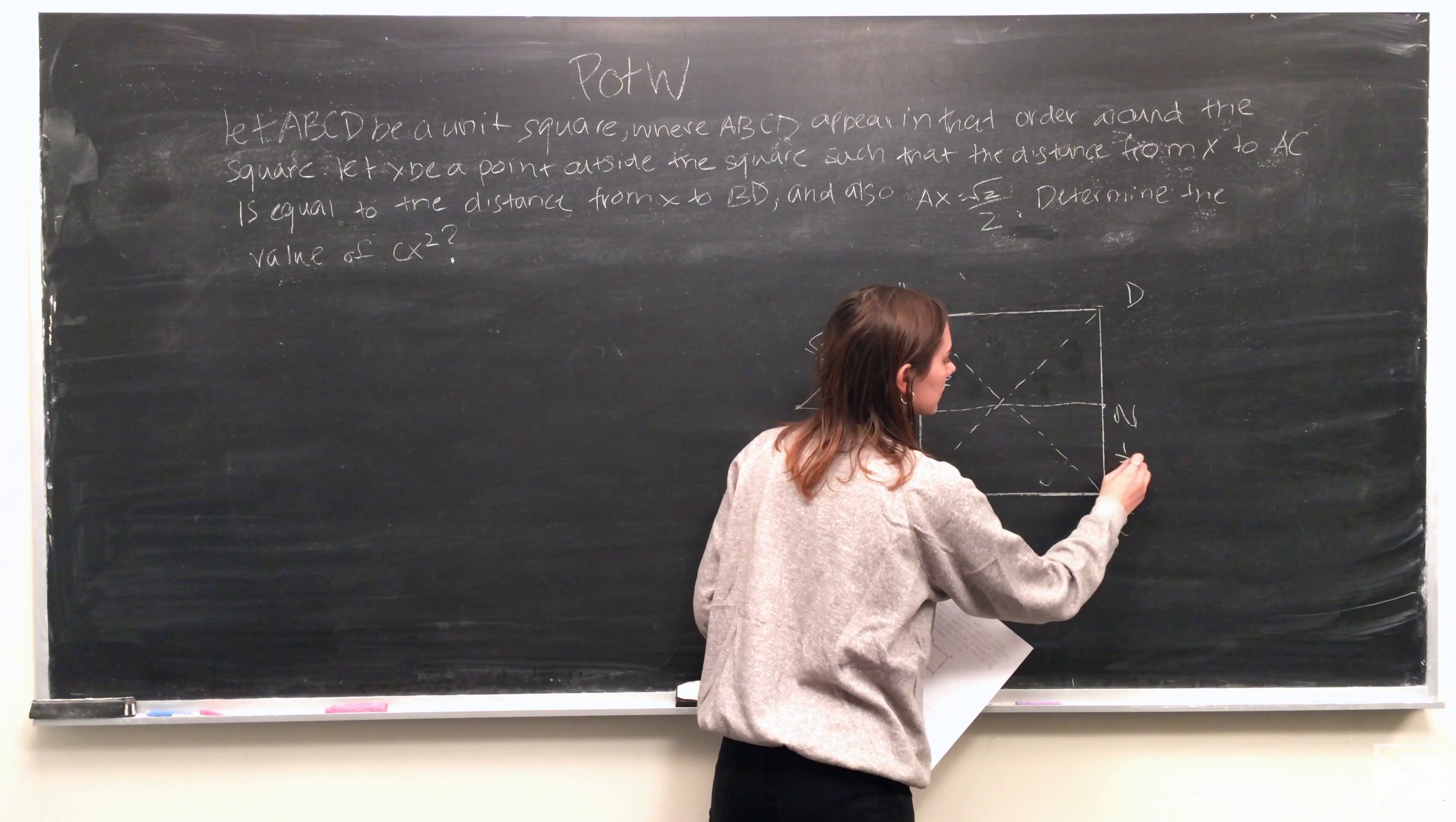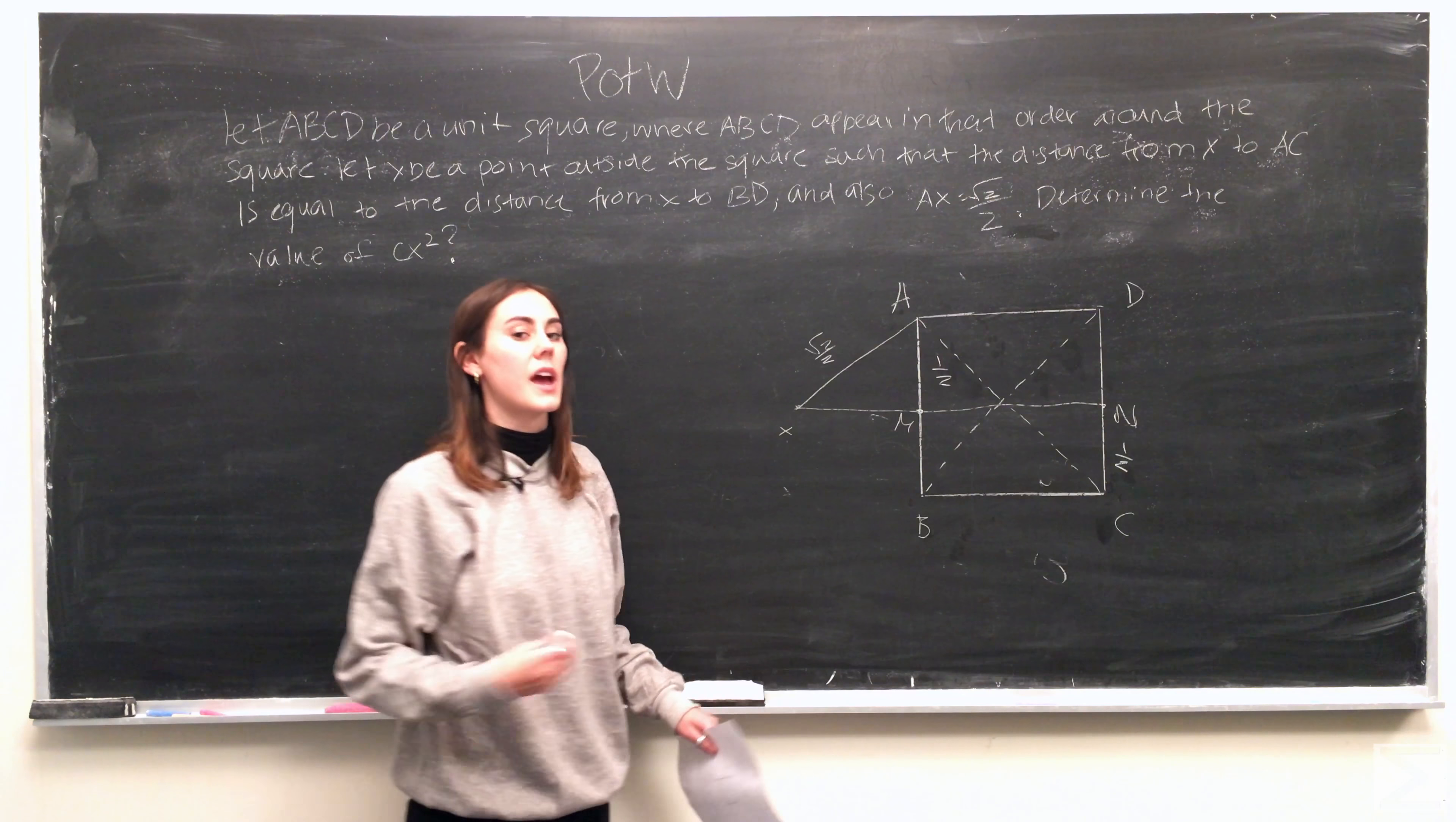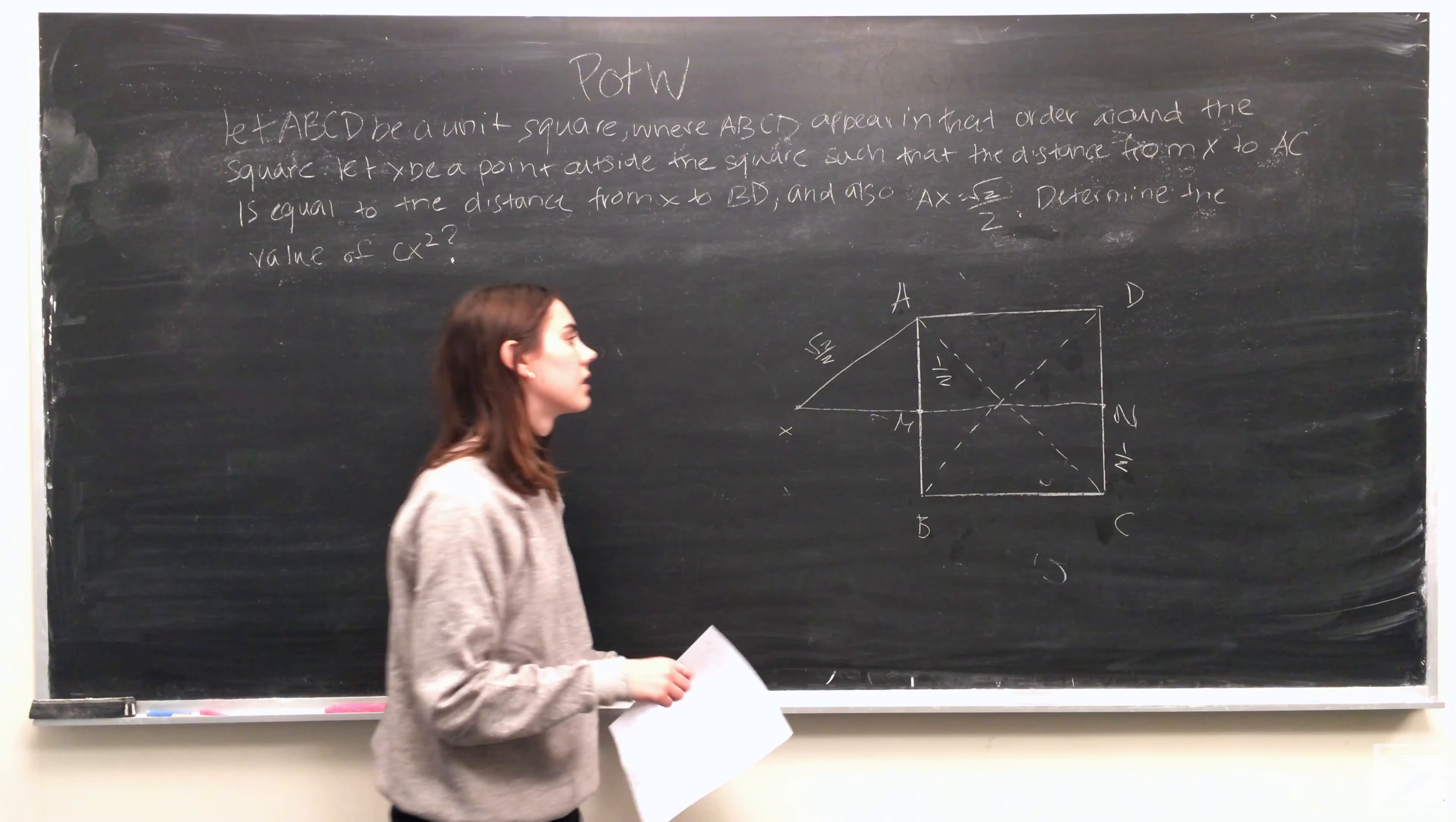What we can do now is actually try to find this distance from x to m, the line segment xm, by just using the Pythagorean theorem with the sides ax and am.